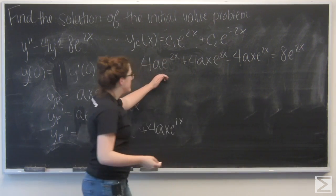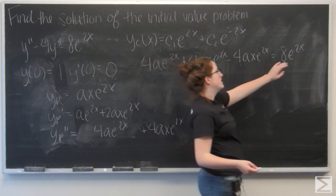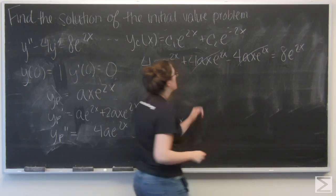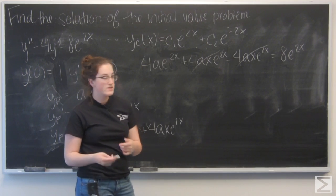I get 4ae to the 2x plus 4axe to the 2x minus 4axe to the 2x equals 8e to the 2x. These two terms are going to cancel out. I'm left with 4ae to the 2x equals 8e to the 2x.